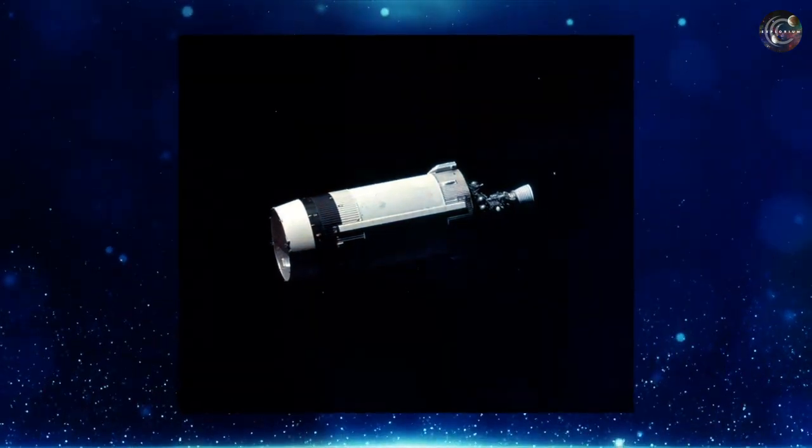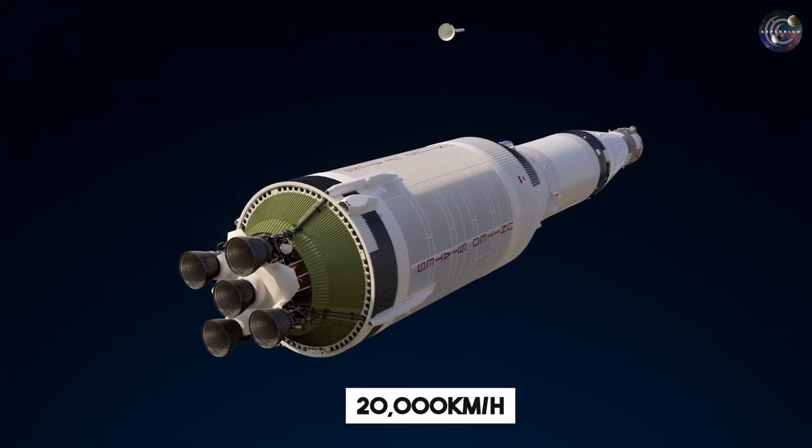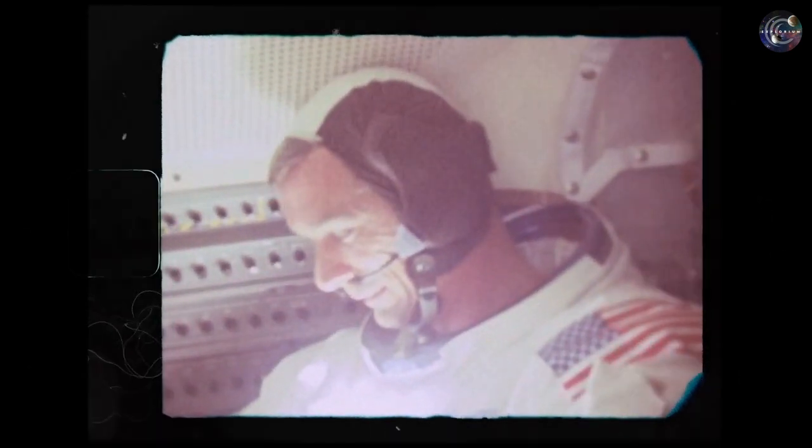This third stage was traveling at roughly 20,000 kilometers an hour at the moment of separation. It just needed to slow down by roughly 140 kilometers an hour to change its course, and this would cause its approach to the Moon to be delayed, causing it to arrive on the other side. NASA accomplished the maneuver, although it did not proceed as planned.